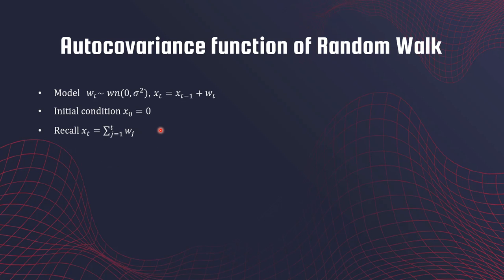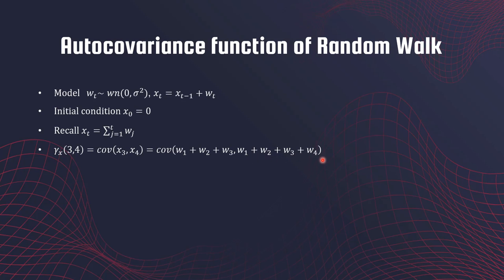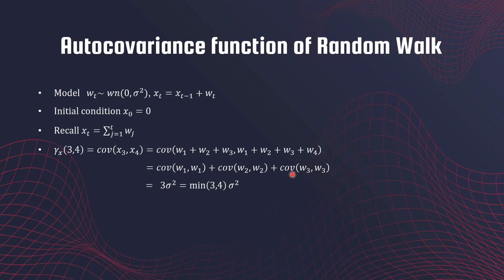We will use this result to calculate the auto covariance function of this process. Suppose we want to calculate auto covariance at time points 3 and 4. X_3 would be w_1 + w_2 + w_3, and X_4 is that entire sum plus w_4. When you expand the covariance, w_4 does not appear on one side, so you are left with variance of w_1 plus variance of w_2 plus variance of w_3, which gives 3·σ².